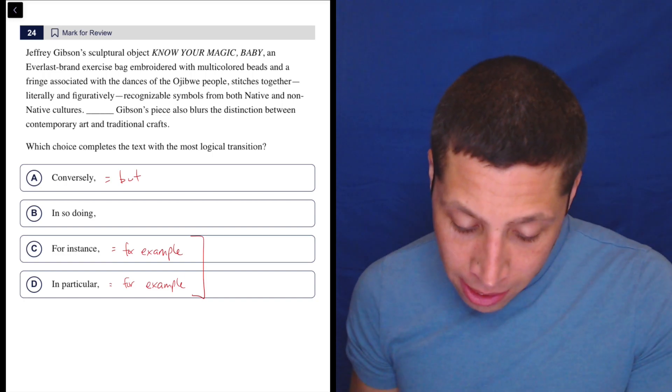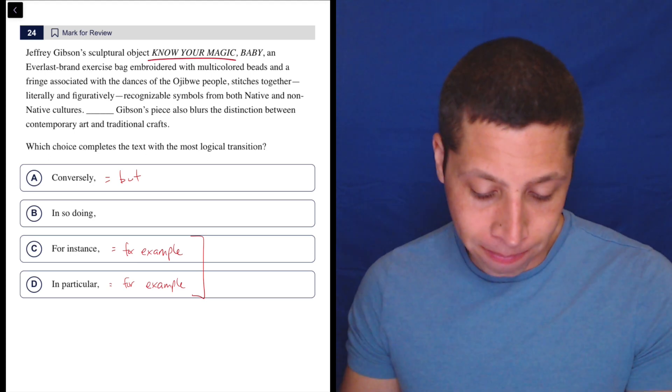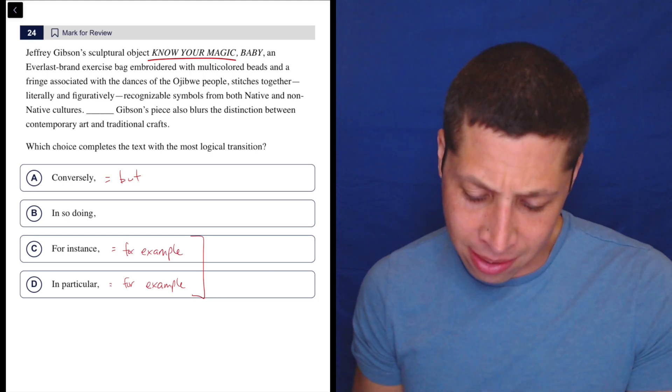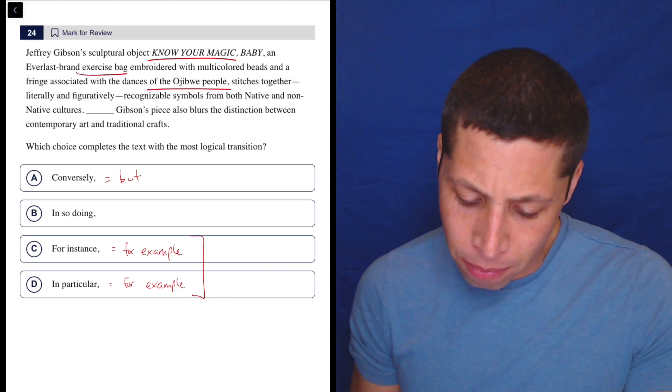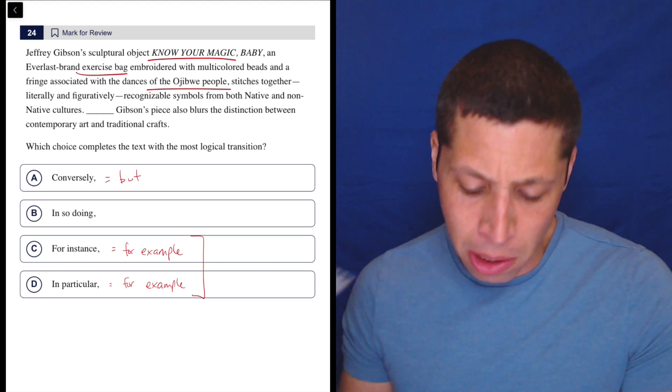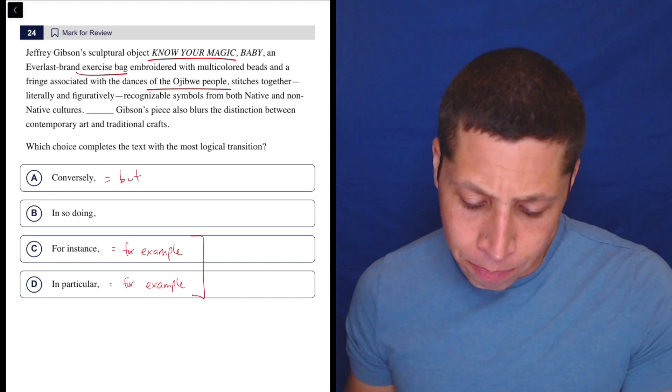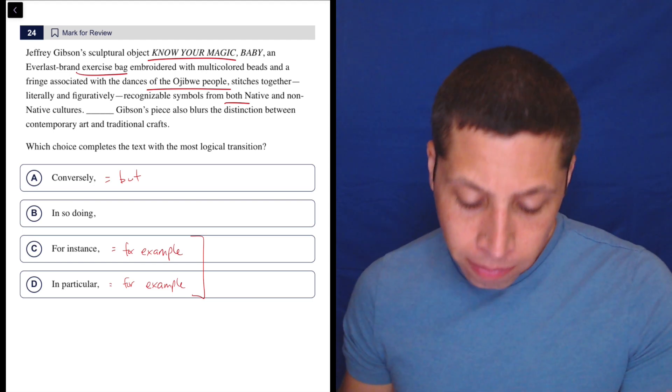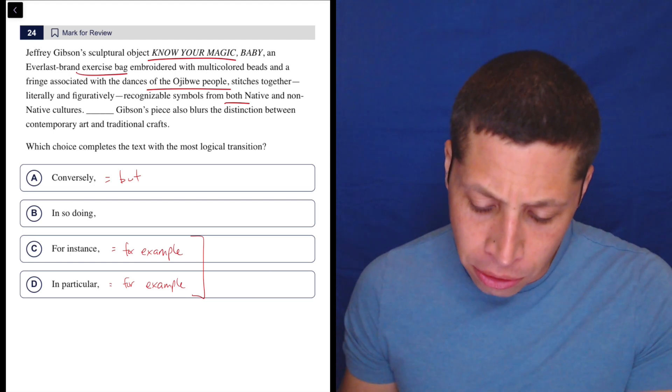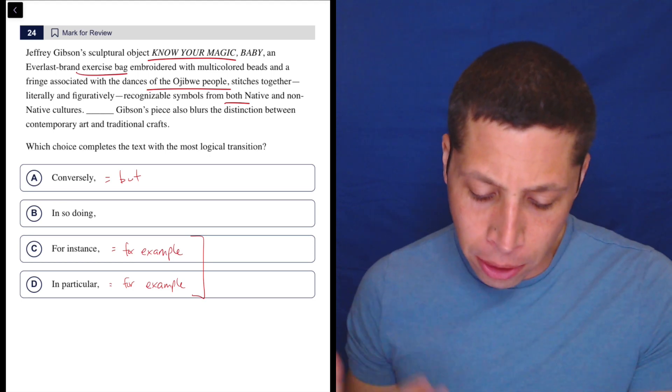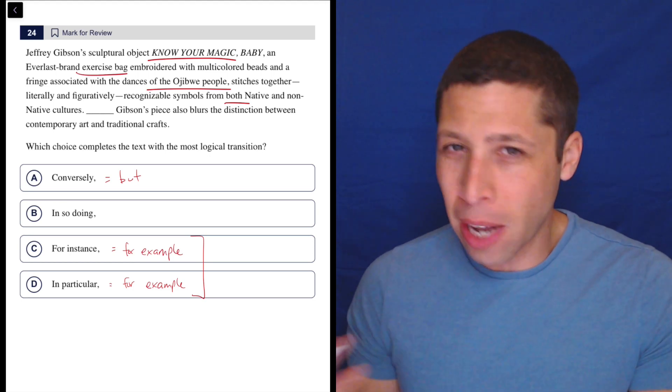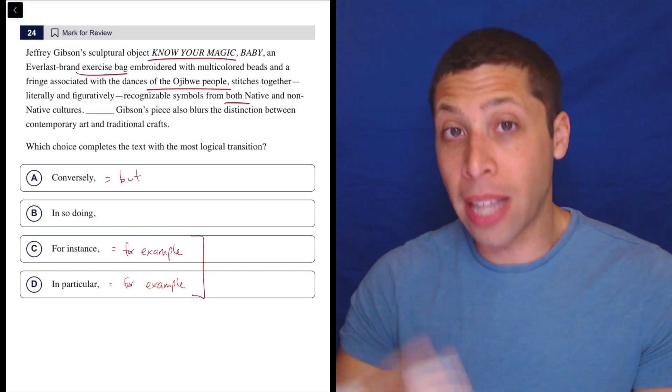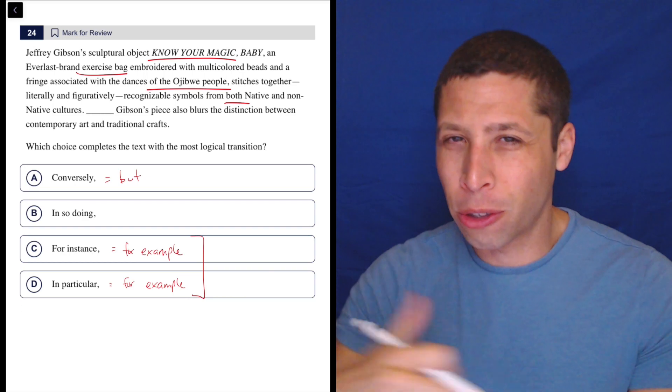So they're giving me this example, right? They're talking about this object and what it does. It uses, I guess, an exercise bag with a dance, I guess, or some clothes associated with the dance. So it's using recognizable symbols from both native and non-native cultures. So Gibson's piece also blurs the distinction between contemporary art and traditional crafts. So it sounds like there's a lot of blending going on, right? He's blending the native and non-native stuff. He's blending the contemporary art and traditional crafts.